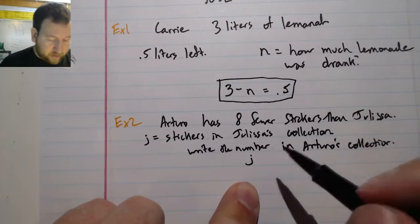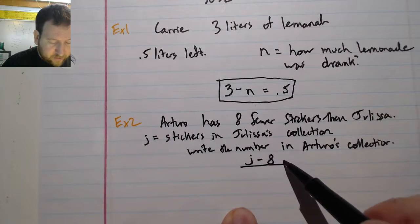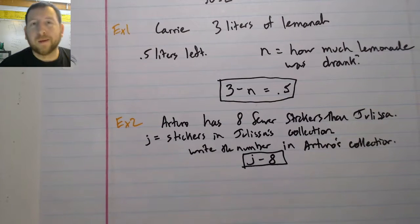Alright, so he has 8 fewer than Julissa. So the number in his collection would be J minus 8. Because he has 8 less. And there you go.